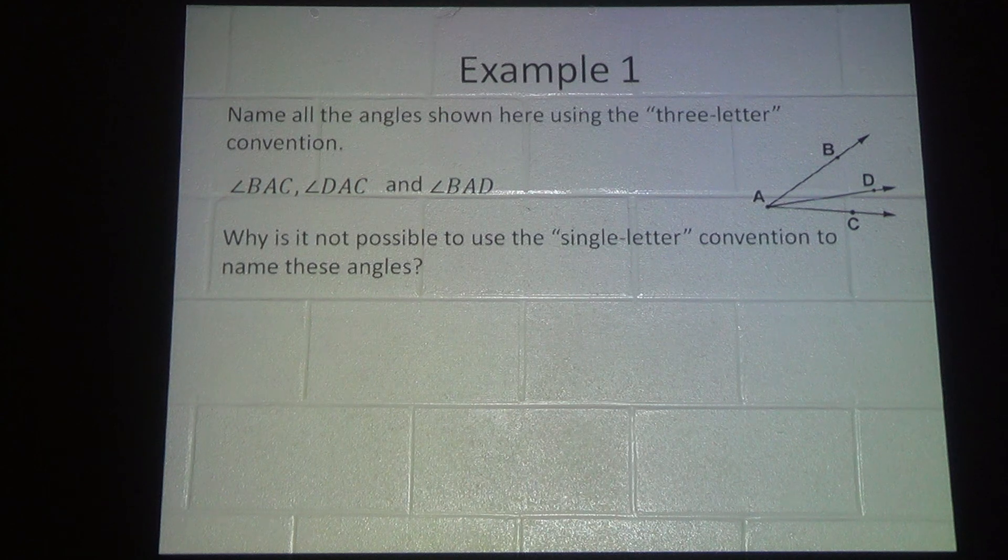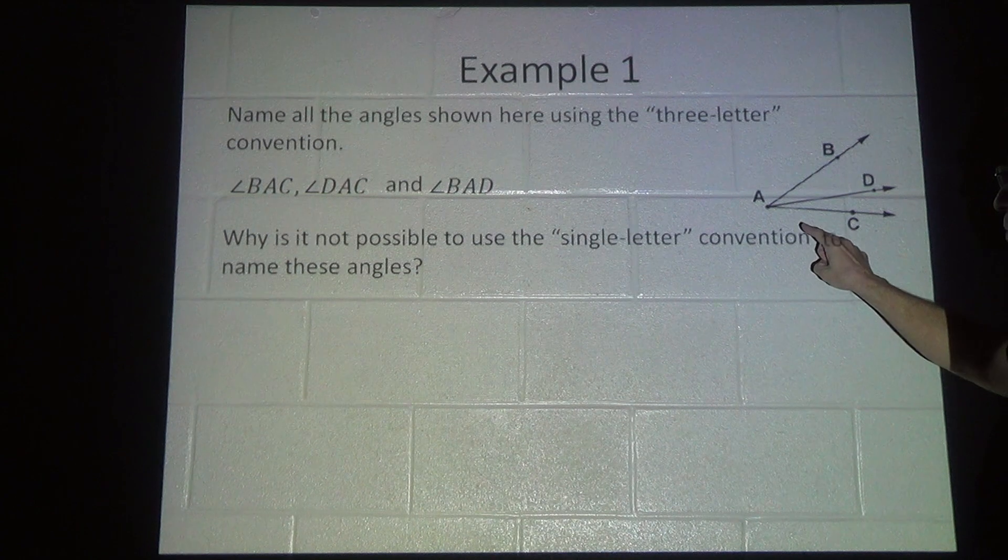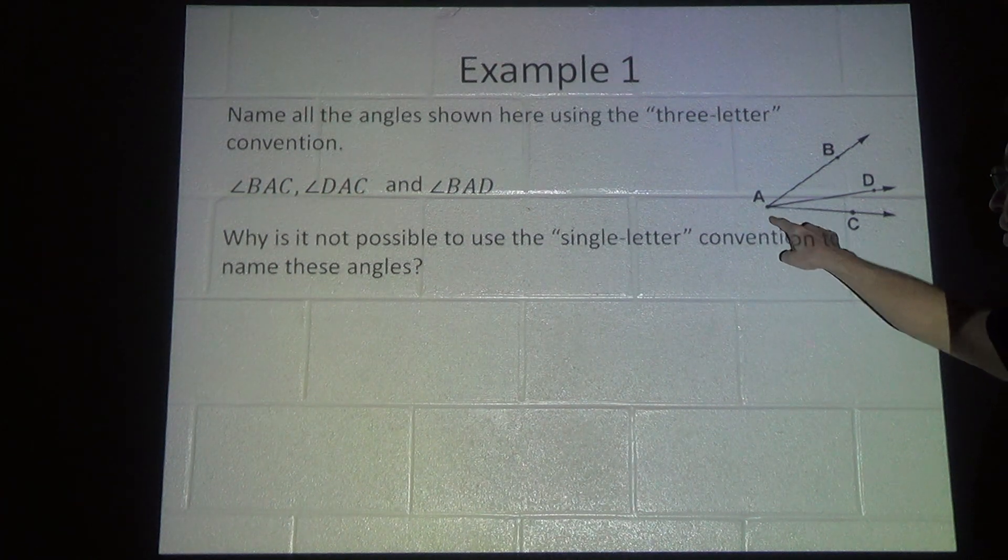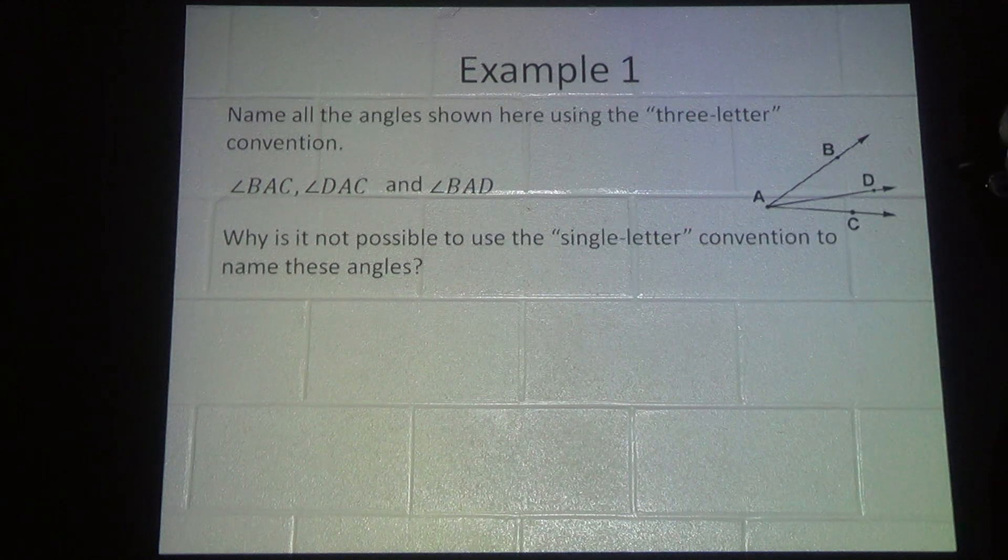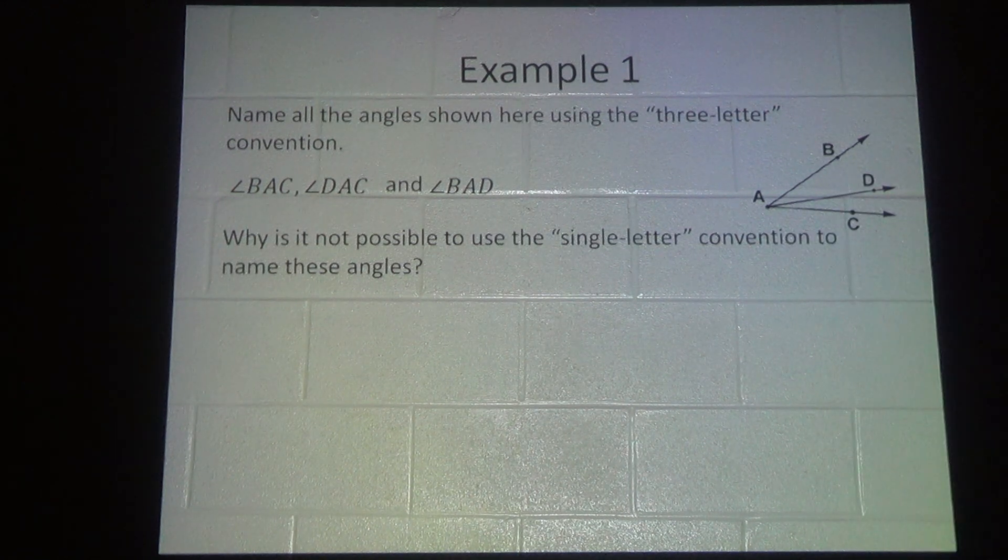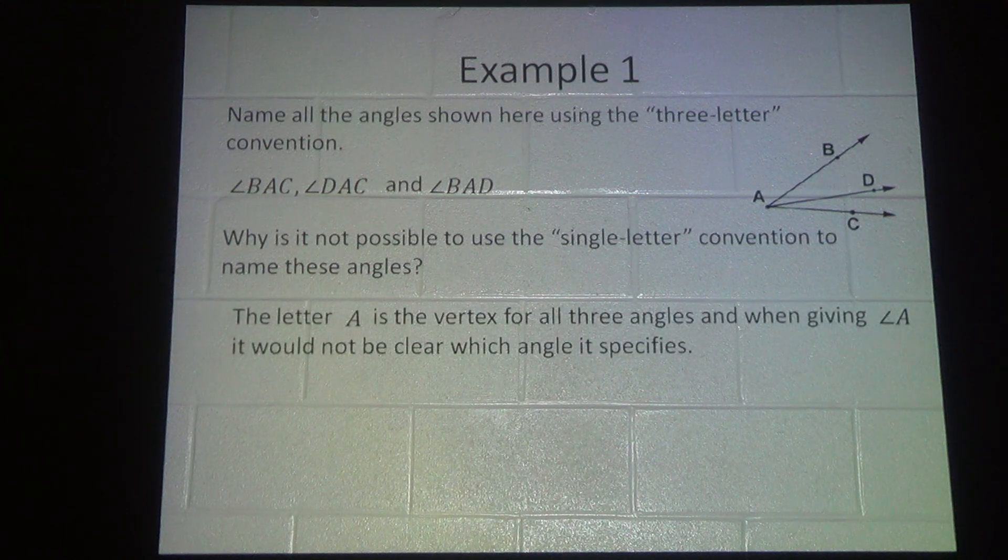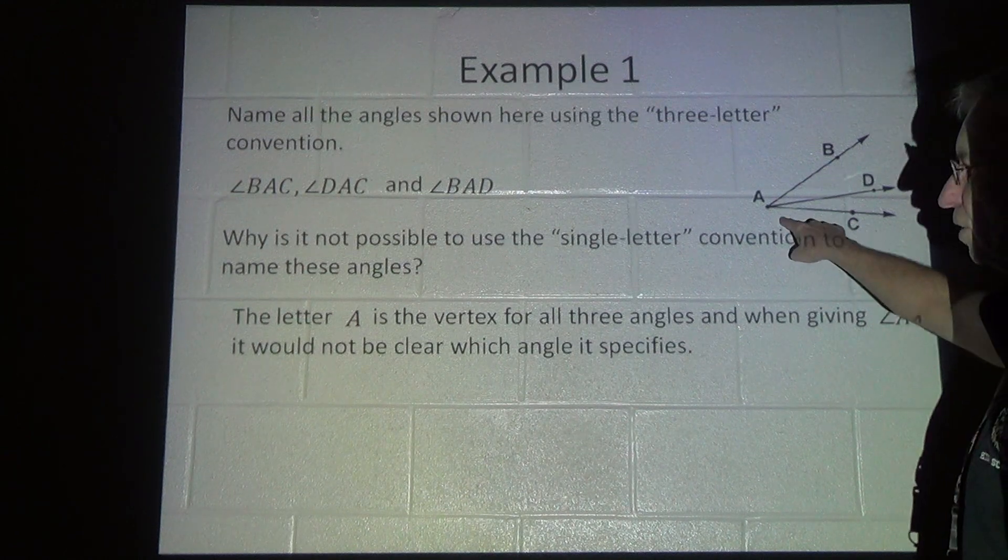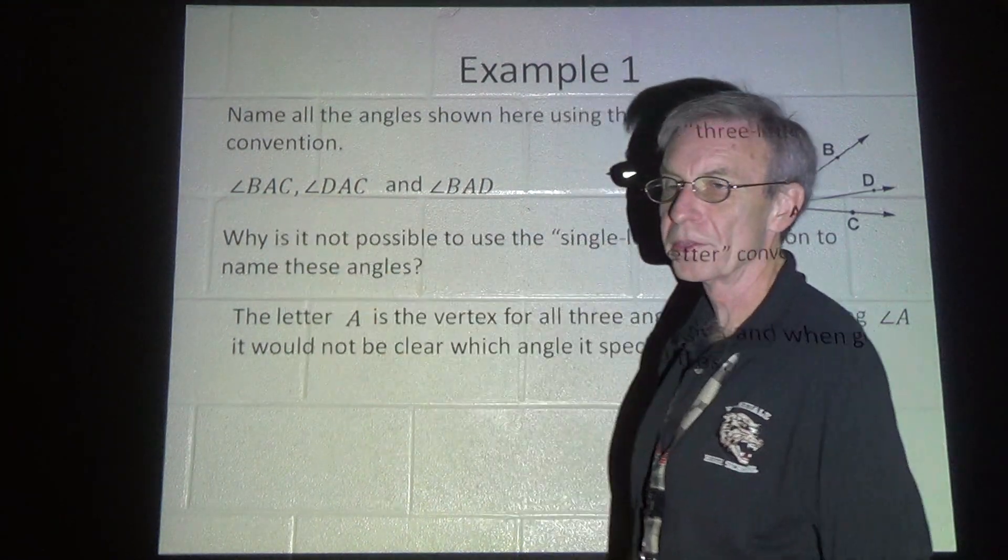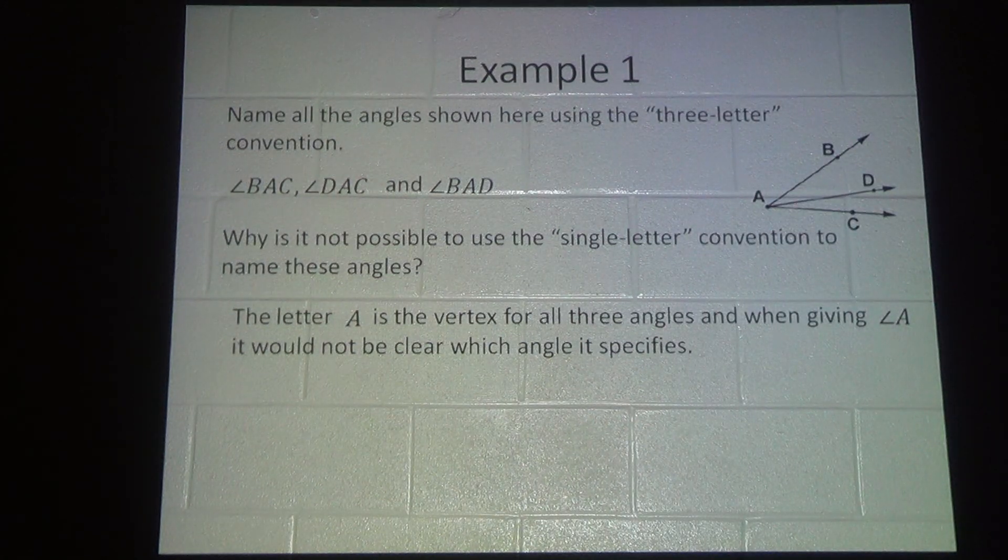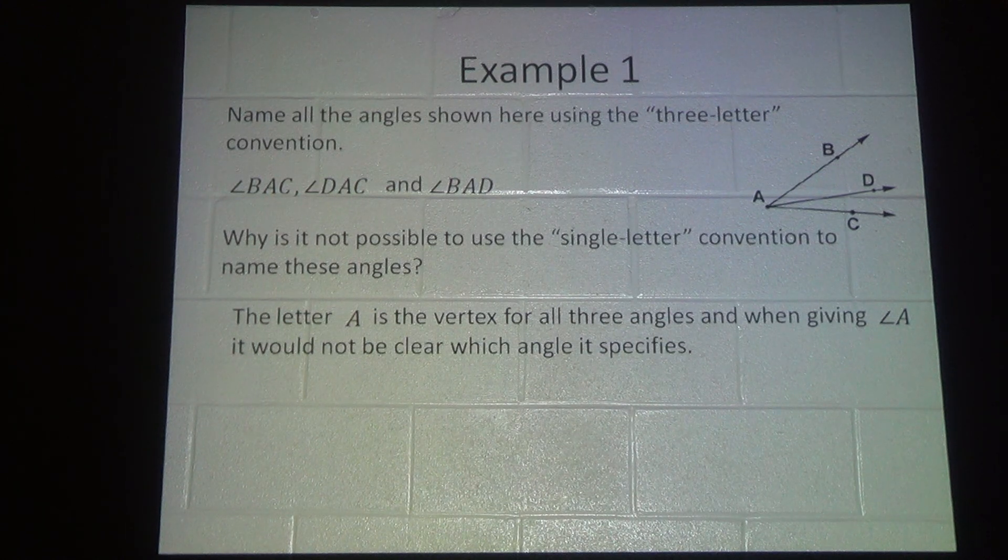They want to know why it's not able to use the single letter convention to name these angles. If I call this angle A, I'm not going to know which one of these three angles that I'm actually talking about. That's important when you have a situation like this that you use the three letter angle name because A is the vertex for all of these.